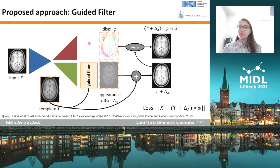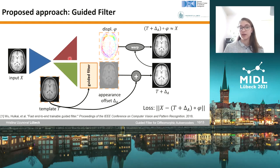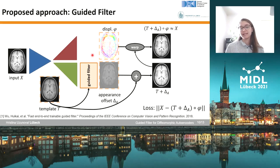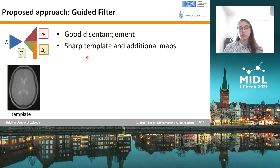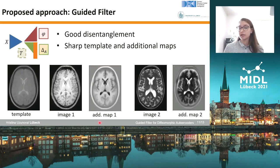To enable strict disentanglement, we propose a guided filter regularization function as the last layer of the appearance decoder. Its function is to guide the appearance offset onto the structures of the template, so the appearance offset cannot change the shape of structures — it can only change their appearance. As a result, our template now looks much smoother with no artifacts, and the additional maps are sharp and do not change the shape of any structures.